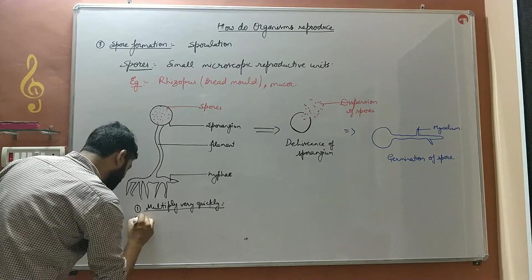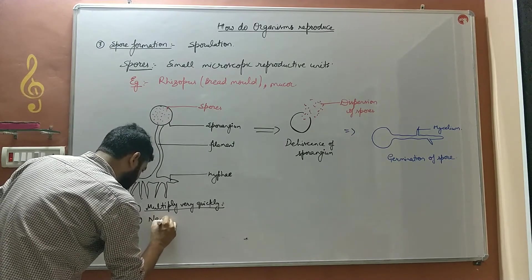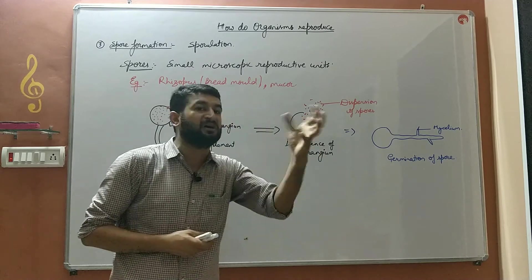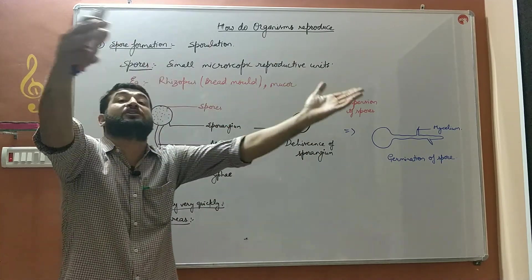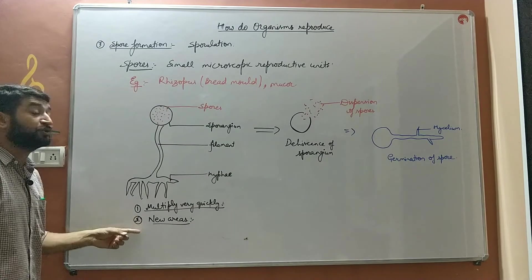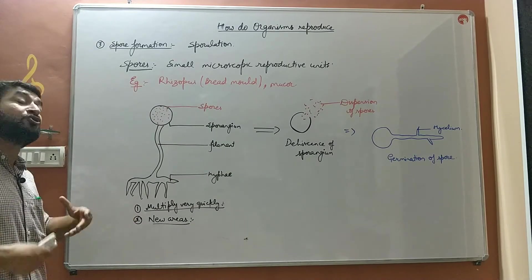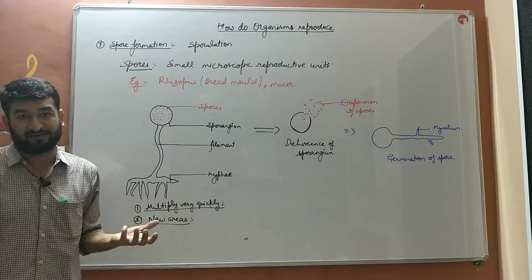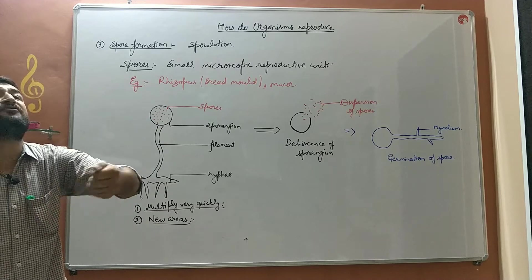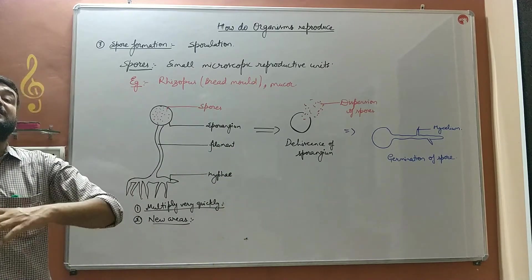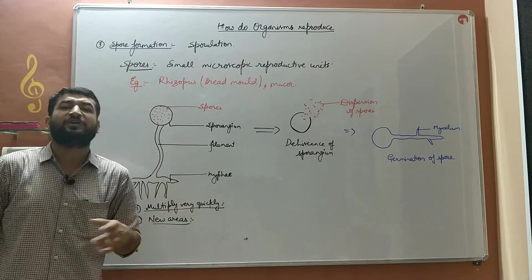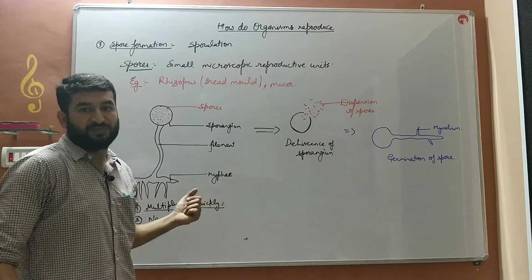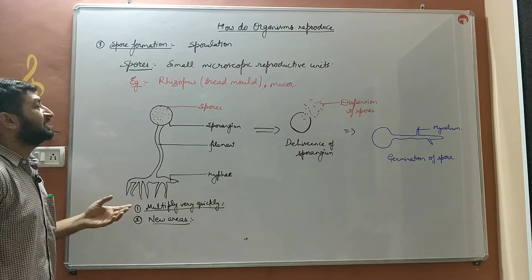Second advantage is new areas. As we discussed, whenever that sporangium's wall bursts the spores are spread or dispersed into a large area, so spores of the new organism can be introduced to new areas or farther places from that particular native area. So the spreading of organism occurs as the dehiscence of sporangium will disperse the spores up to a large area.